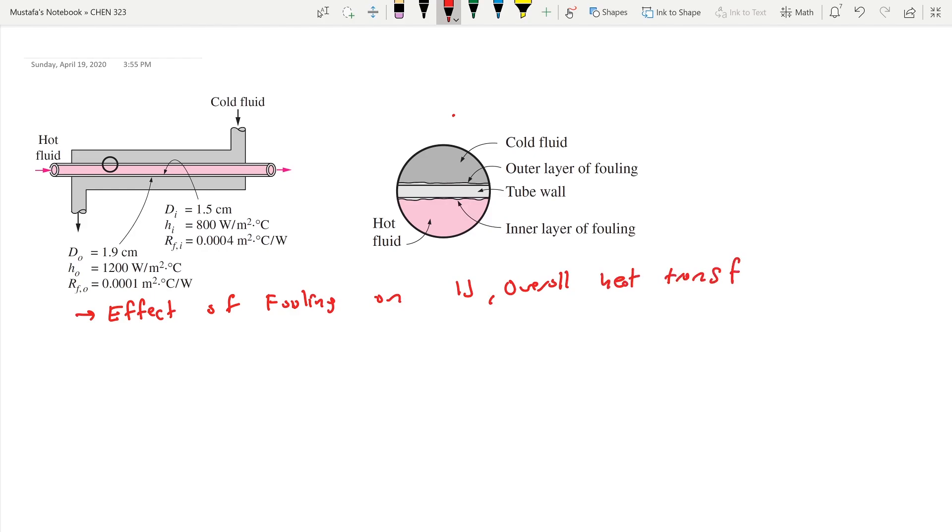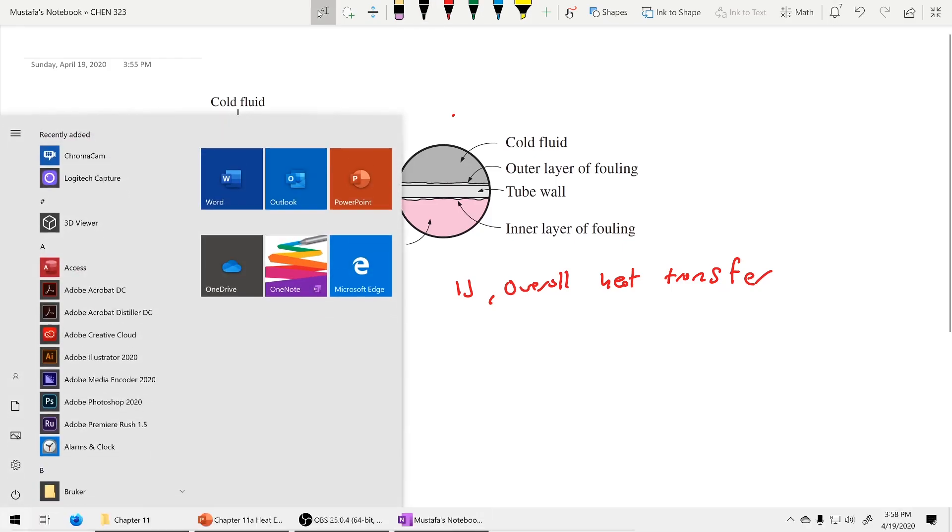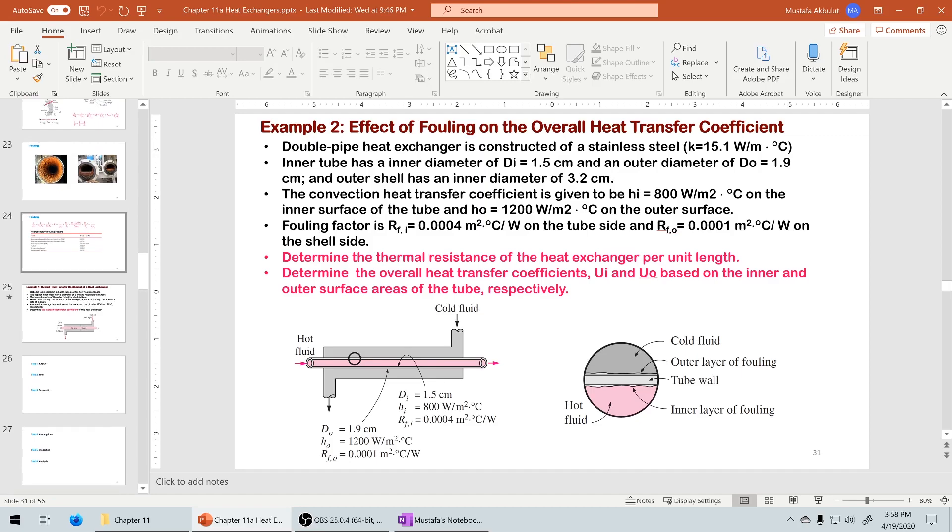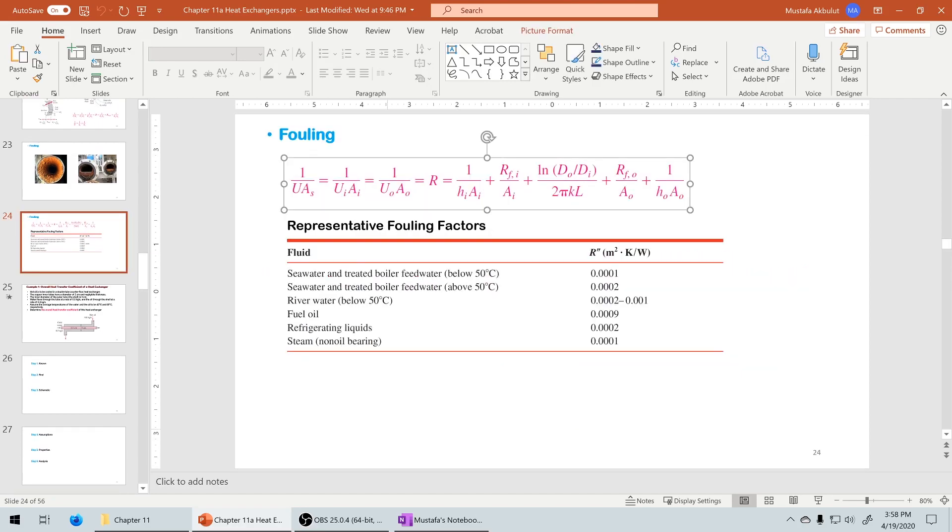All the properties are given and let's assume everything is constant. Our goal in part A is to find the overall resistance. I'll show you the equation because we already have this equation. I'm just going to copy it here.